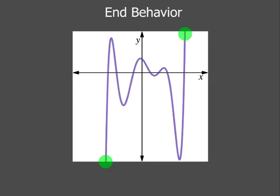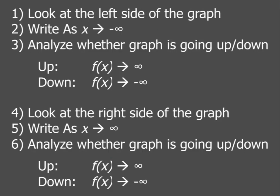Now, when we analyze end behavior, there's going to be six things you're going to have to do. First, you're going to look at the left side of the graph. You're going to write something down, and what you're going to write down is as x approaches negative infinity, because that means left side of the graph in math speak.